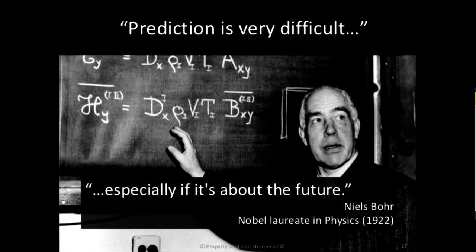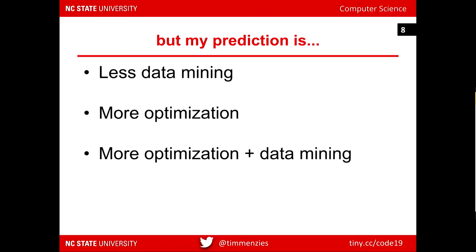I'm going to make a prediction about the future. One thing you expect from professors: they make crazed predictions, and at probability 0.7 they're going to be wrong. So here is my possibly wrong prediction: we're going to see less data mining and more optimizing, and more optimizing plus data mining combined. The technology you're dealing with is great for beginners, but let's talk about what happens when you graduate.